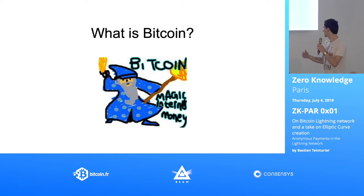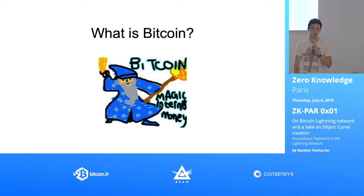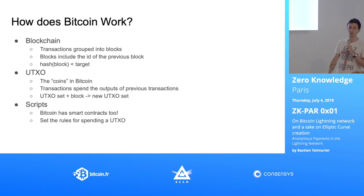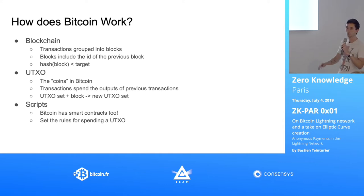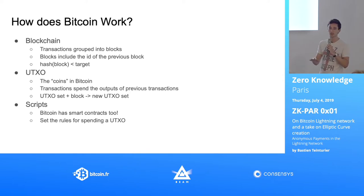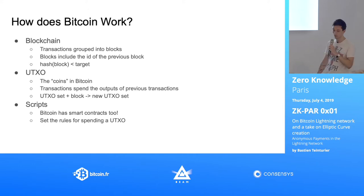So first of all, what is Bitcoin? Bitcoin — who doesn't know Bitcoin? Bitcoin is magic money. It's internet money. A lot of people know the high-level things, but once you start digging into the details, there are a lot of interesting and subtle elements in the protocol and in how it works.